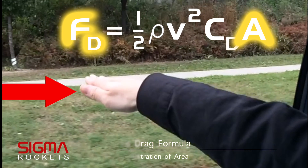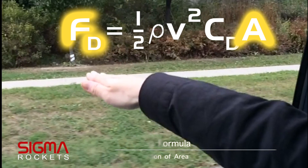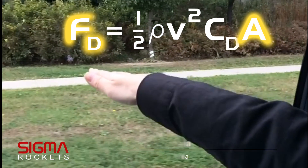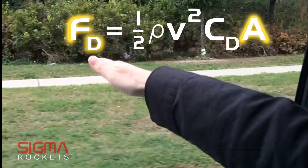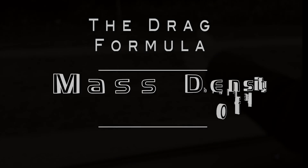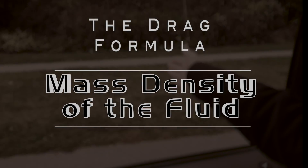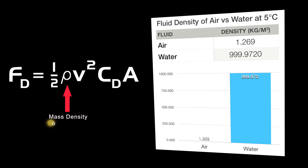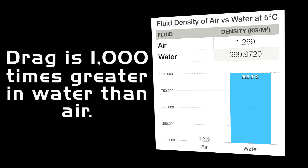We can see the effect of area A on drag in the formula. The rho symbol represents the mass density of the fluid in the formula. This allows the drag formula to be used on projectiles that move through fluids such as water. Water is 1000 times more dense than air.